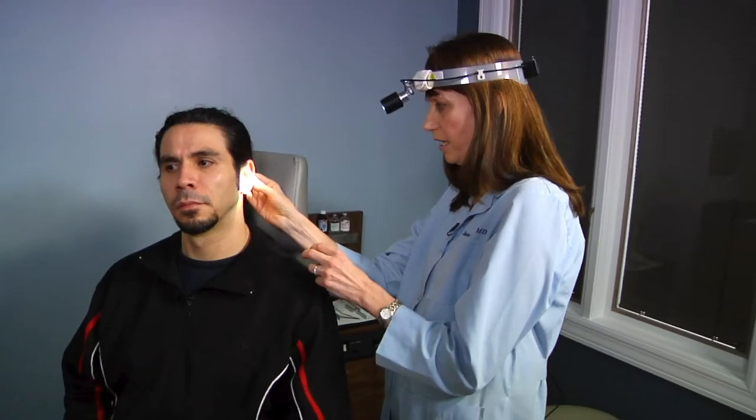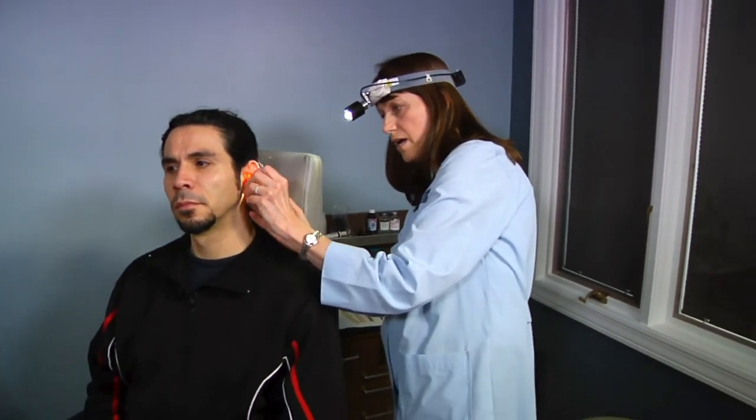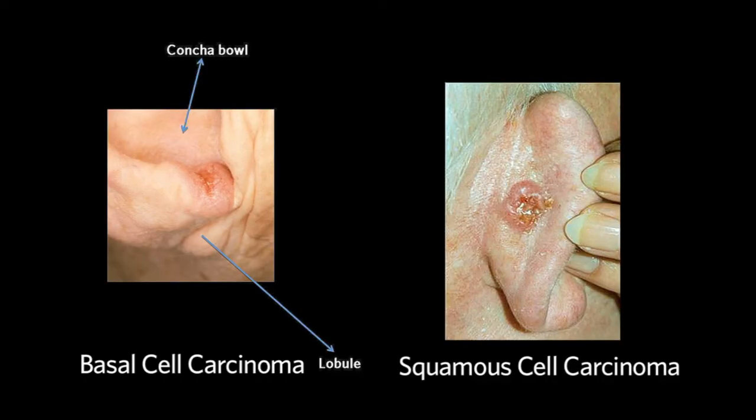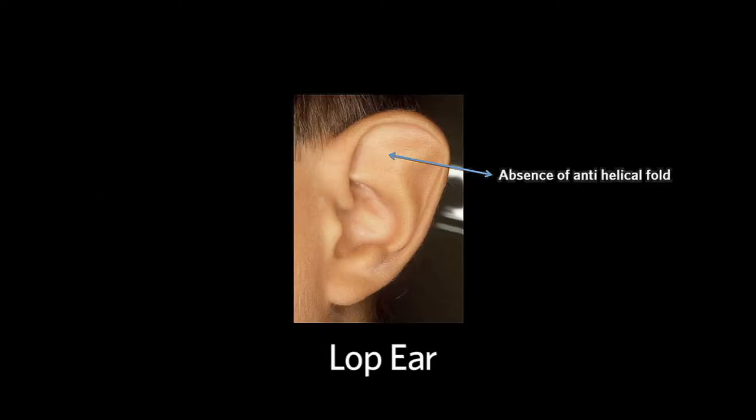We're checking for any lesions like little skin cancers, hematomas, or lop ear. Now we're looking behind the ear, checking the mastoid area. All looks good. Common abnormalities of the pinna, or external ear, include basal cell and squamous cell carcinoma, lop ear — in which the anti-helical fold is missing and the concha bowl is often enlarged — and auricular hematoma, which, if untreated, leads to cauliflower ear.